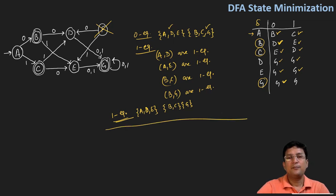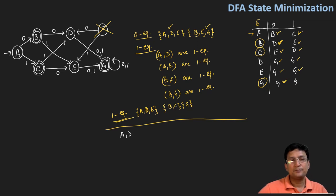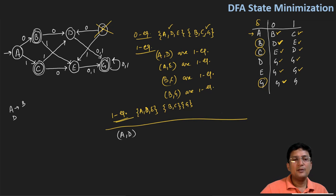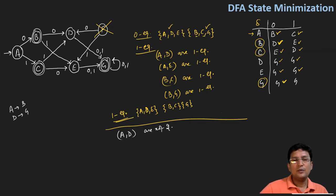Now I'll perform the two equivalence. For the two equivalence, the pairs I have to check include A and D. A on zero goes to B and D on zero goes to G, and B and G are not in the same set. Hence, A and D are not two equivalent.